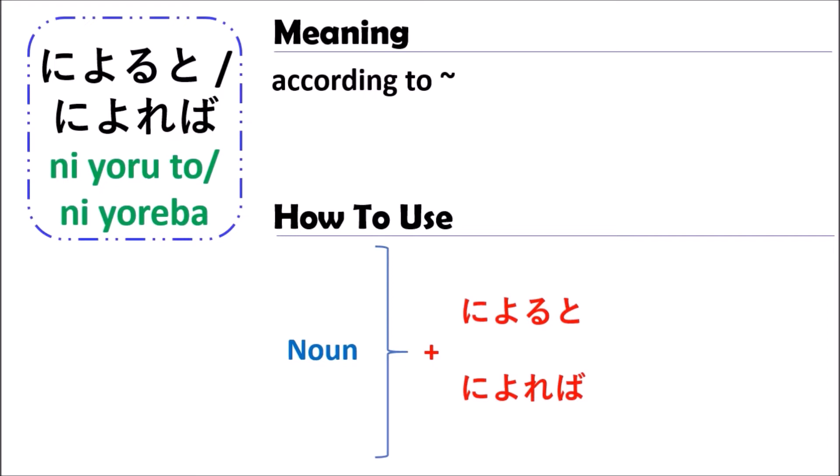That means 'according to' — according to what, to the noun. So your noun expresses what meaning you are conveying. So it means 'according to the noun.' And when you use the grammar of ni yoru to or ni yoreba, it means 'according to.'